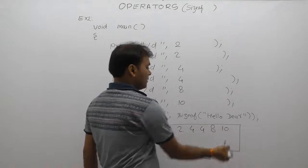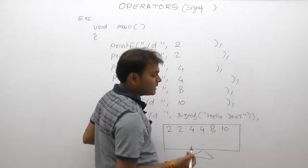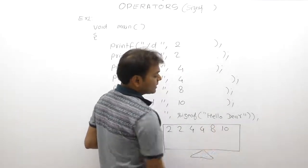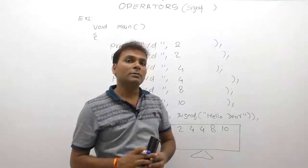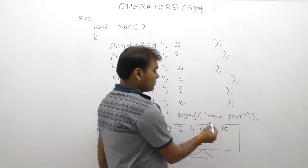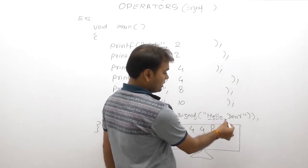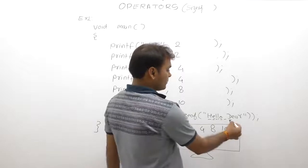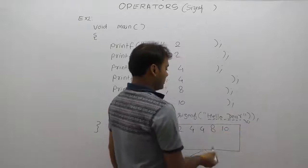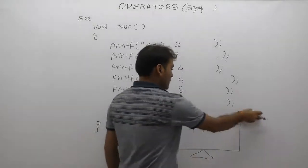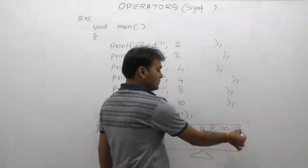For a string of N characters, the size is N+1 bytes because strings are terminated by the invisible null character. Counting each character and spaces: 1, 2, 3, 4, 5, space=6, 7, 8, 9, 10, plus the null terminator makes 11. Therefore sizeof the string returns 11 bytes, and 11 is printed.